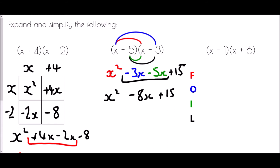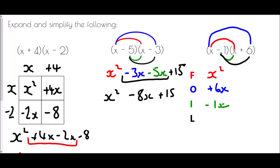Using FOIL: x times x is x squared. The outsides: x times plus six is plus six x. The insides: negative one times x is negative one x. The last: negative one times positive six is negative six. Simplifying the x terms: plus six minus one is plus five x. So the answer is x squared plus five x minus six.